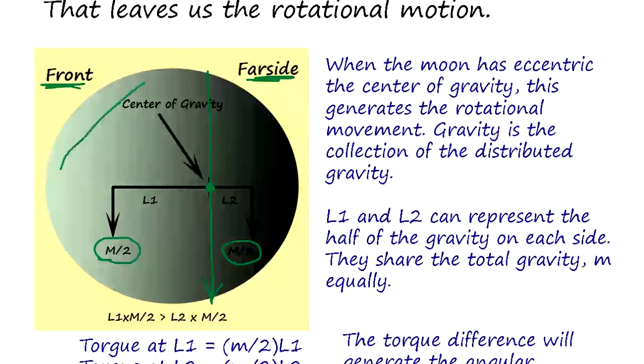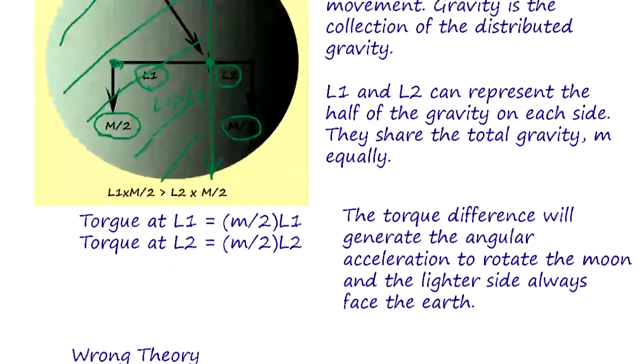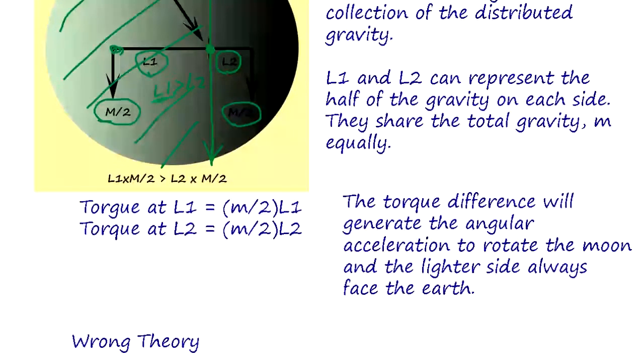Since the lighter side is spread, the center of gravity of the left side is L1. The center of gravity of the right side is L2. Obviously, L1 is larger than L2. So angular acceleration is caused by torque. And if you consider the torque, torque is L1 times m over 2. The right side is L2 times m over 2.